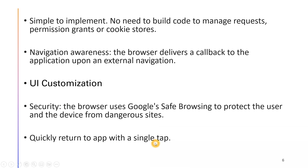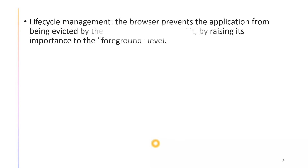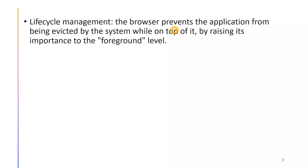Chrome Custom Tab quickly returns to the app with a single tab. From your app, if you launch the Chrome Custom Tab, you can easily return back to your application. Lifecycle management is also easy — the browser prevents the application from being evicted by the system while on top of it by raising its importance to the foreground level. From Android 8 onwards, only foreground applications have the capability to run, so this browser always stays at the foreground level, interacting with the user.